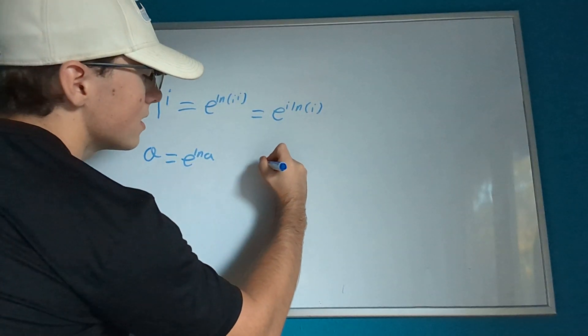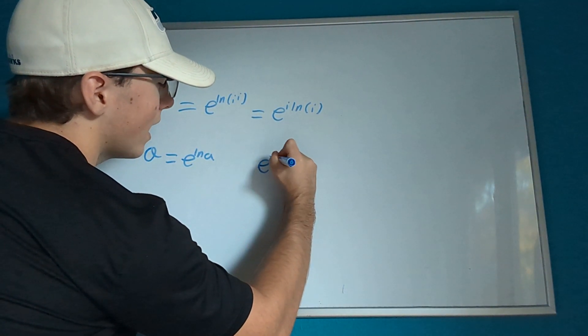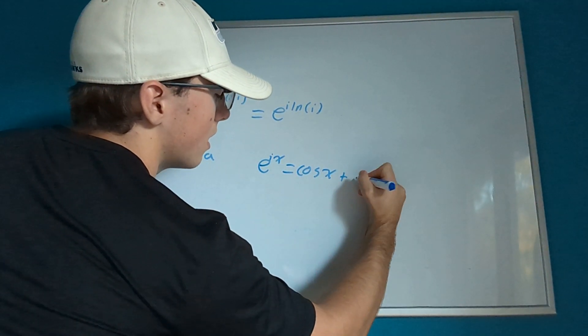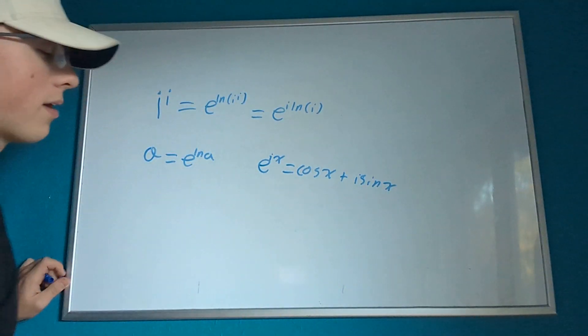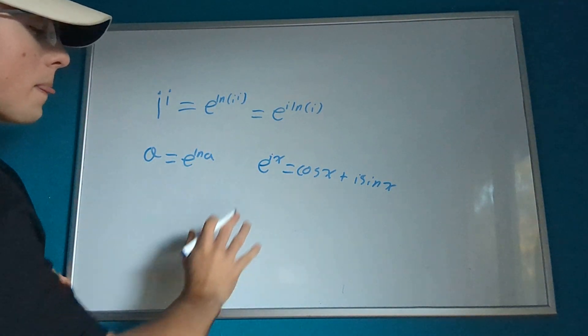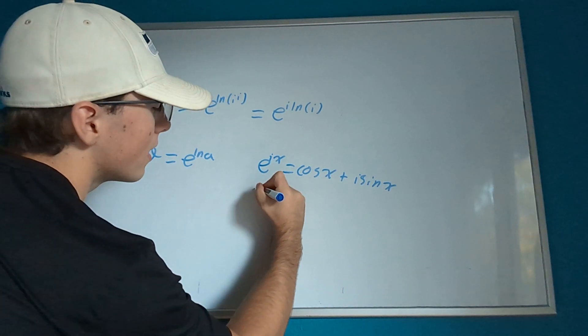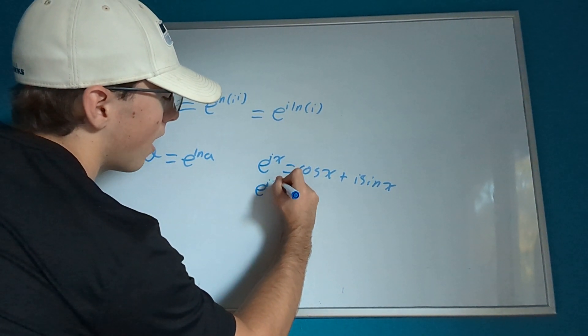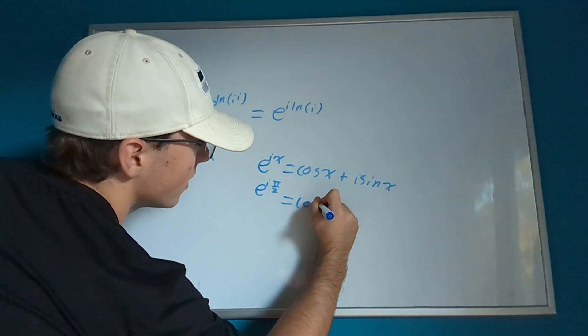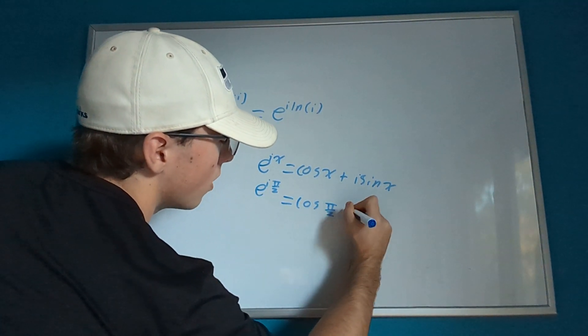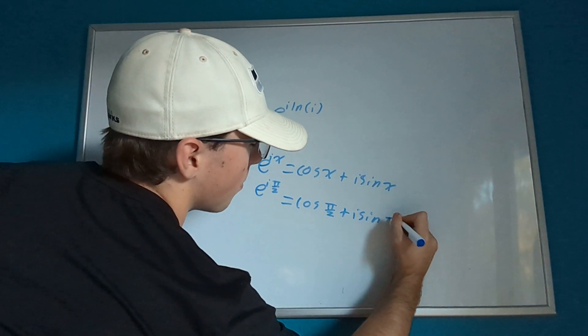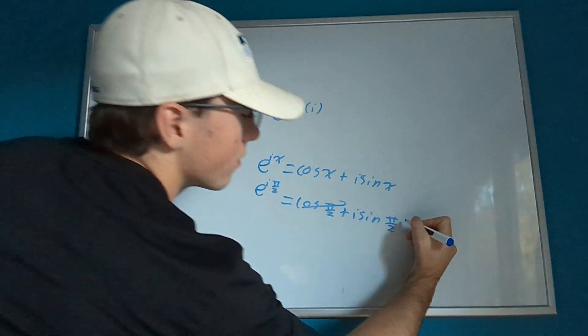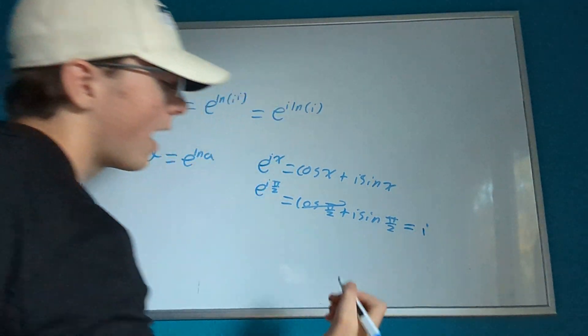Let's recall Euler's formula: e to the ix equals cosine x plus i sine x. If we put in x equals pi over 2, we get e to the i times pi over 2 equals cosine of pi over 2 plus i sine of pi over 2. Well, cosine of pi over 2 is 0, so that goes away, and sine of pi over 2 is 1, so this just equals i.